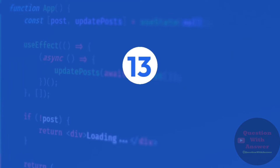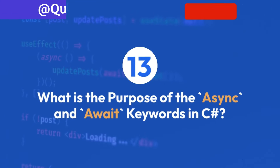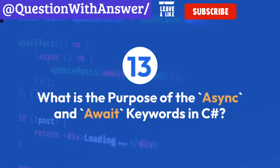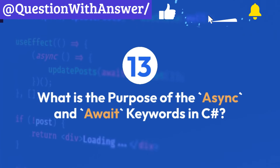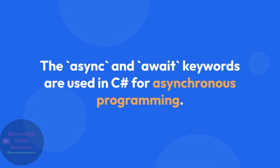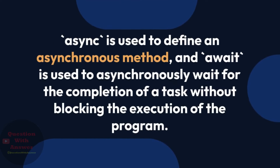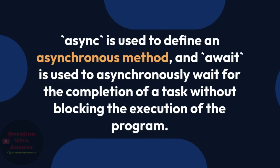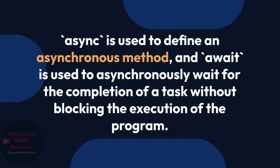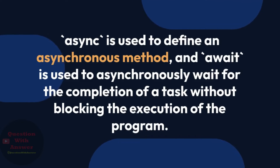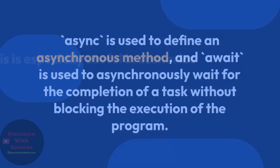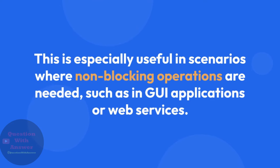Question 13: What is the purpose of the async and await keywords in C#? Answer: The async and await keywords are used in C# for asynchronous programming. Async is used to define an asynchronous method, and await is used to asynchronously wait for the completion of a task without blocking the execution of the program. This is especially useful in scenarios where non-blocking operations are needed, such as in GUI applications or web services.